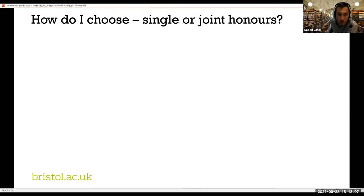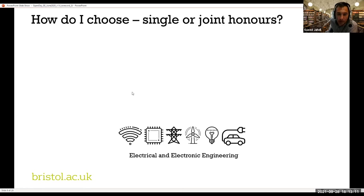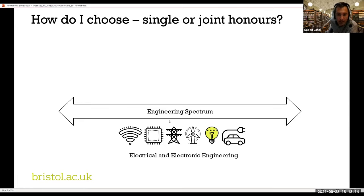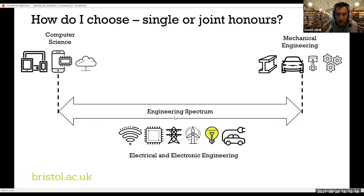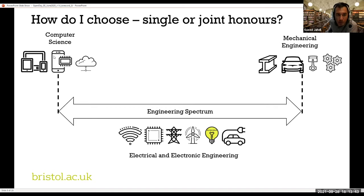What problems do you want to solve? That depends on the area you would like to select to study, depending on the problems you want to solve in the real world. If you are more interested in computer science, that means computers, laptops, phones, etc. These are interrelated, so you will need some information on computer science but also still need to be a good electronics engineer. On the other hand, if you are more interested in electric vehicles, there is a combination between mechanical engineering and electrical engineering there too.